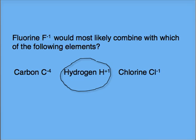Keeping that in mind, fluorine would most likely combine with which of the following elements: carbon, hydrogen, or chlorine? We know fluorine would combine with hydrogen because a positive one valence and a negative one valence make zero.